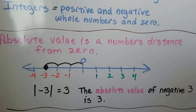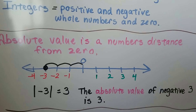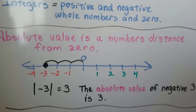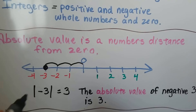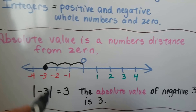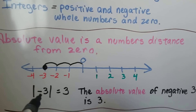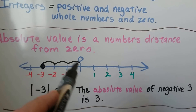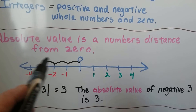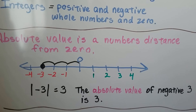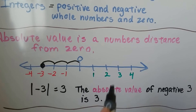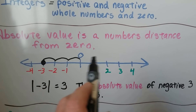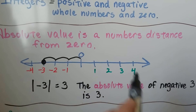It's important that we know what absolute value is. It's a number's distance from zero, and you'll see it with these bars on each side. The absolute value of negative 3 is 3 because it's 3 hops away from zero. The absolute value of positive 4 would be 4 because it's 4 hops away from zero.